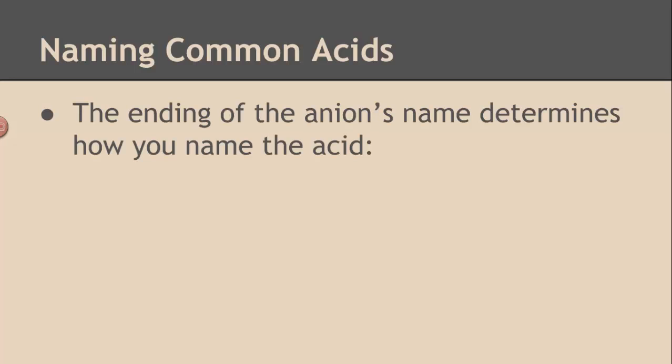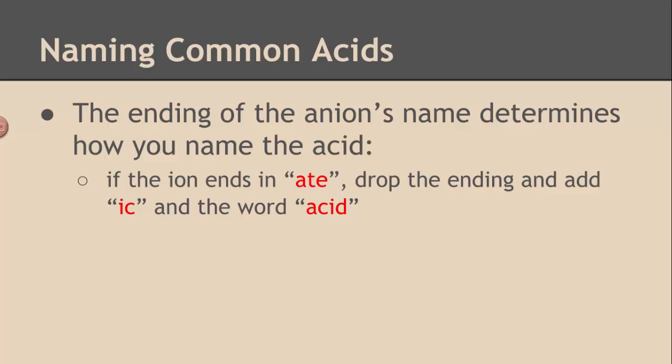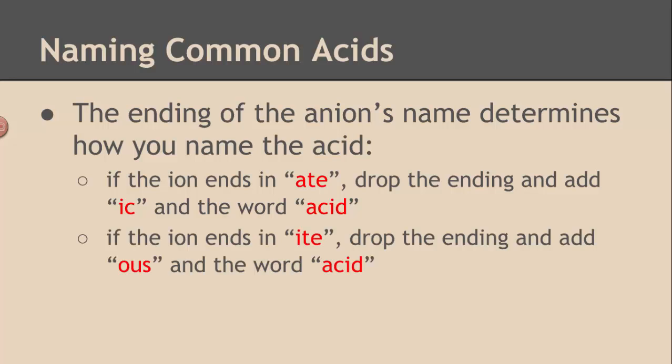So how we do this is as follows. We take the name of the anion and we look at the ending of it. So if the ending of the anion, the negative ion, ends in -ate, you drop that and put -ic and then the word acid. If the anion ends in -ite, you drop the -ite, you put -ous and use the word acid.